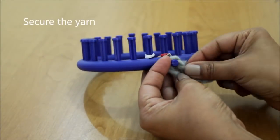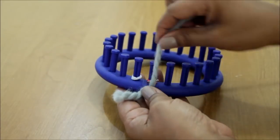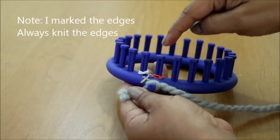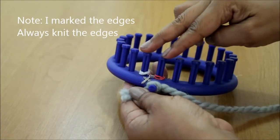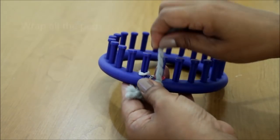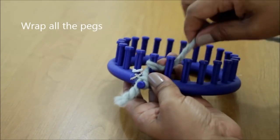Alright let's begin with the cast on. Let's start by securing the yarn to the anchor peg and I did want you to keep in mind that these two pegs here are your edges as we knit. Alright let's start with the first and we're going to wrap.